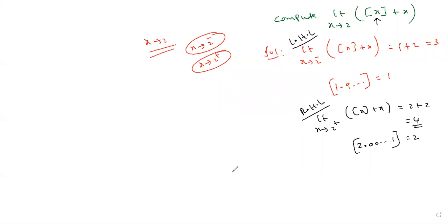So the answer for this question: the LHL value is 1.9, RHL is 2.0. LHL is not equal to RHL. Whenever left hand limit is not equal to right hand limit, then the limit does not exist.